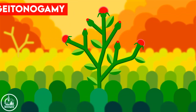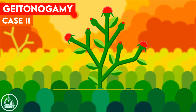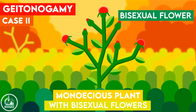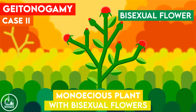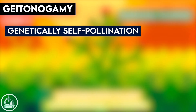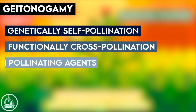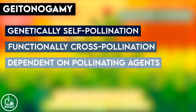The second case is when the plant is bisexual but the pollination occurs from one flower to another. Geitonogamy is a complex case as genetically it is a type of self-pollination, while functionally it is similar to cross-pollination and it is also dependent on the presence of pollinating agents.